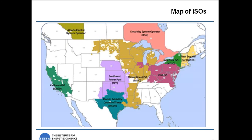This map shows the existing independent system operators and regional transmission organizations. The Southeast and most of the West are still largely regulated. The deregulated states where we have the most well-developed markets are in the Mid-Atlantic, New England, and the Midwest, and also California and Texas. The Southeast is largely the domain of the Southern Company and Duke Energy, which are two of the largest utilities in the country.